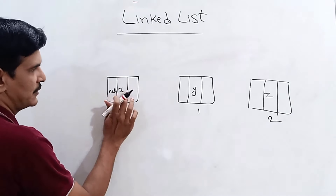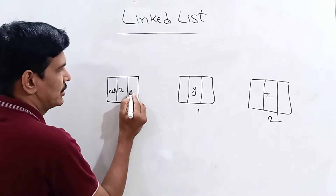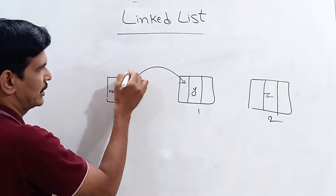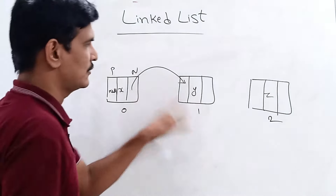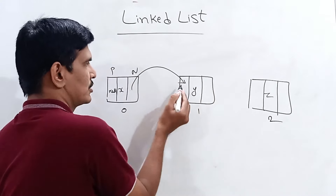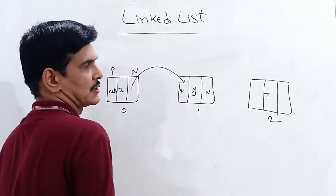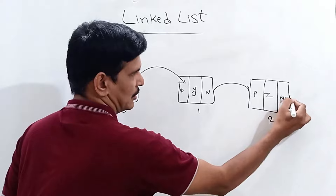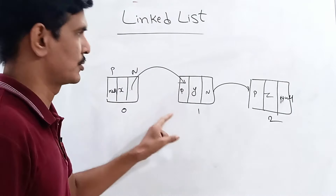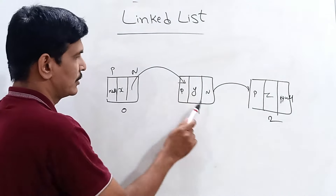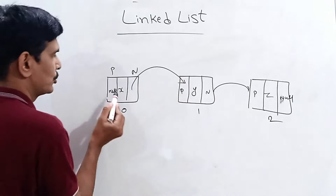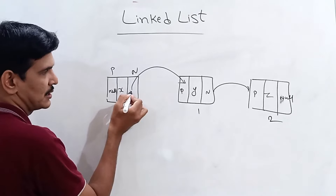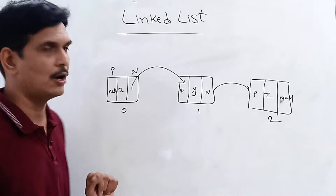For example, with nodes X, Y, Z: X is at index 0, with no previous element so the previous address is null. X's next part points to Y's address. Y has the previous address pointing to X and the next address pointing to Z. Z's next address is null since there is no next element. So data is stored as nodes with three parts: previous address, element value, and next address. This is a doubly linked list structure.